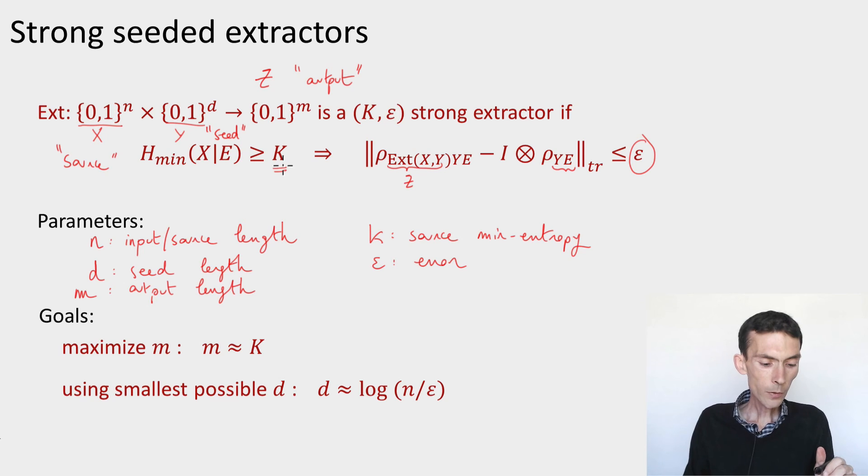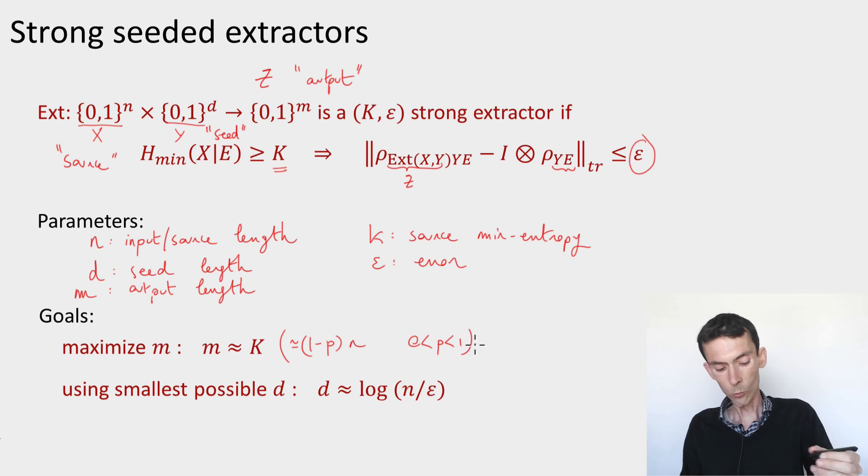It could be very small. You can think of it as we had in previous examples, linear in n. So K could be (1-p) times n for some p, which is a fixed number between 0 and 1. Say K is half n, for instance. That's a good setting of parameters to keep in mind. So if K is half n, this means that the amount of bits of uncertainty that are left in the source X conditioned on the side information E is about half the total number of bits.